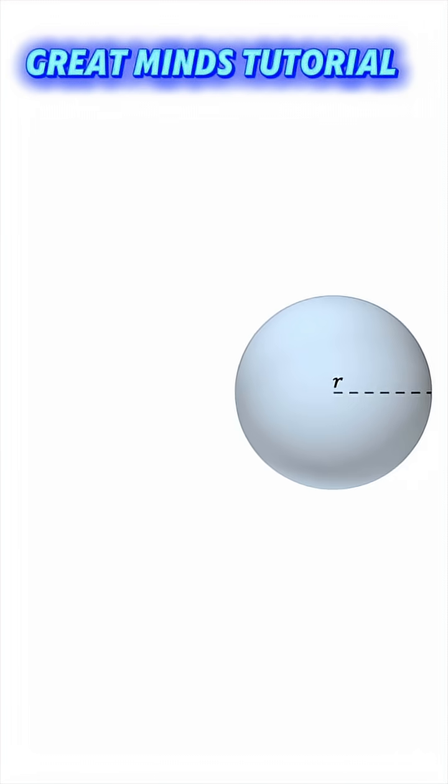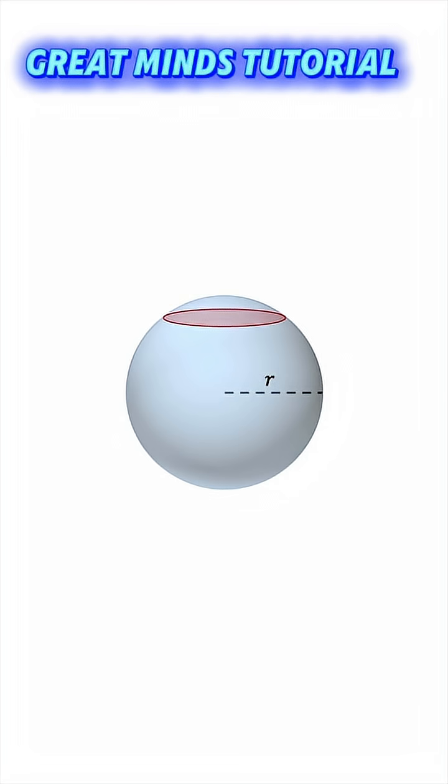But the problem with this sphere is that its cross-section is not uniform. You will always get a circular cross-section, but the size of the circle varies depending on where you slice the sphere. So how do we solve this problem?